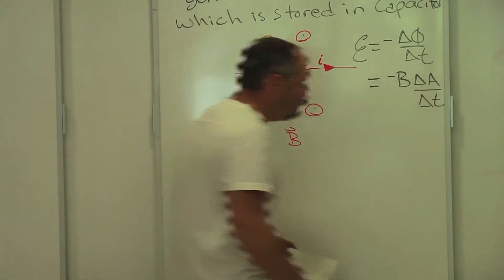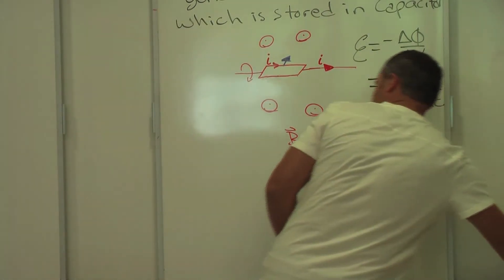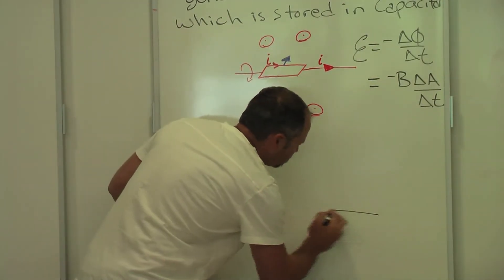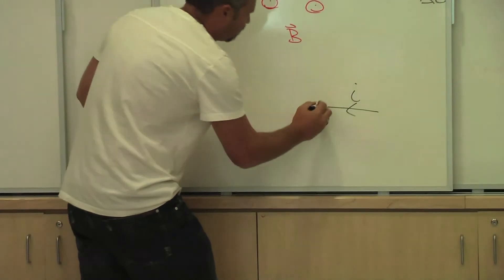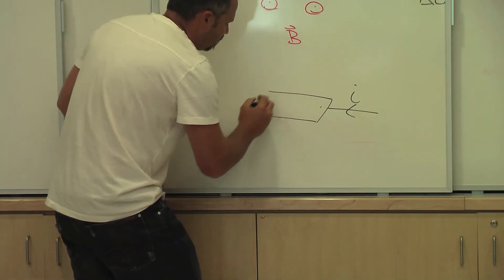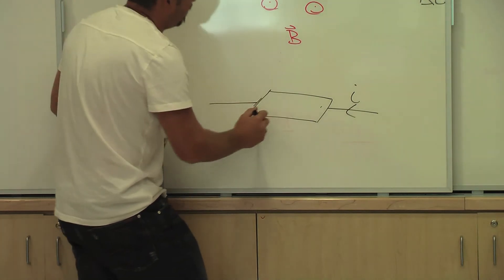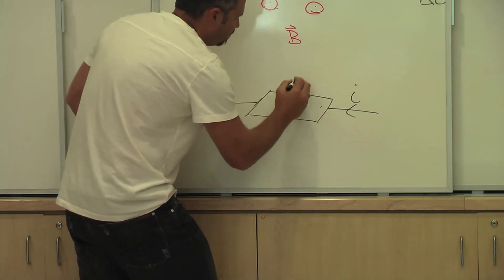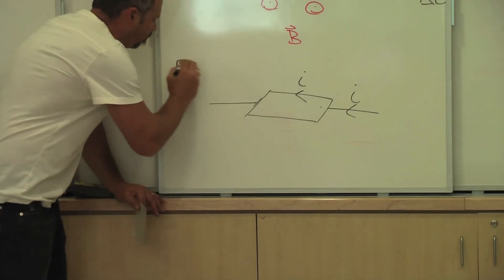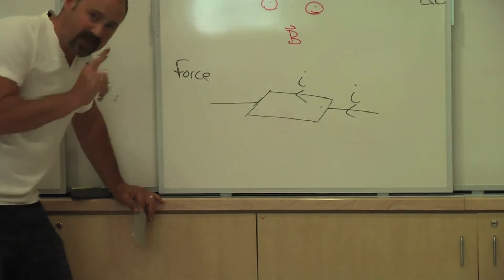Now, what happens on the return trip? Well, on the return trip, electricity is flowing like this because it's coming from the capacitor. And I'll just draw the top in.